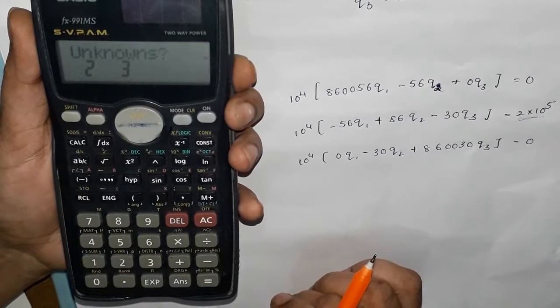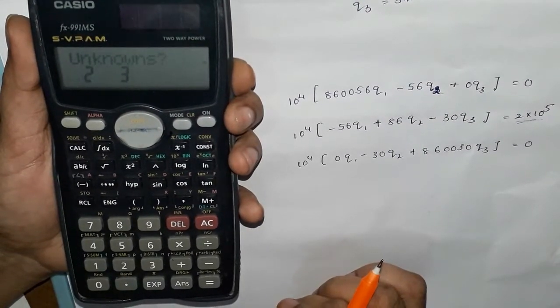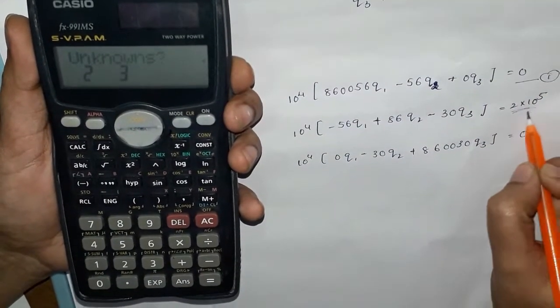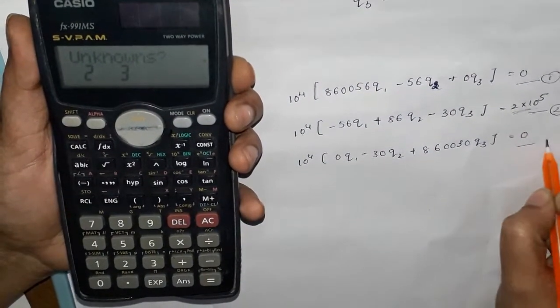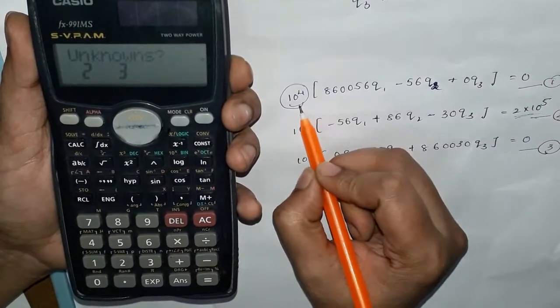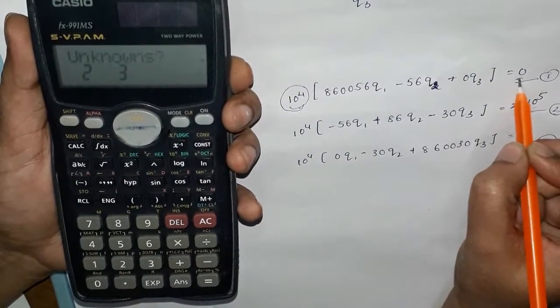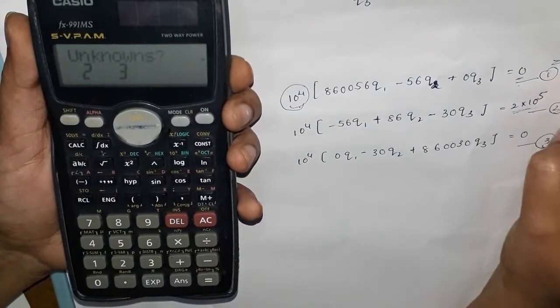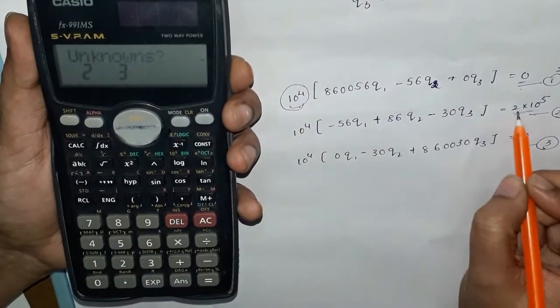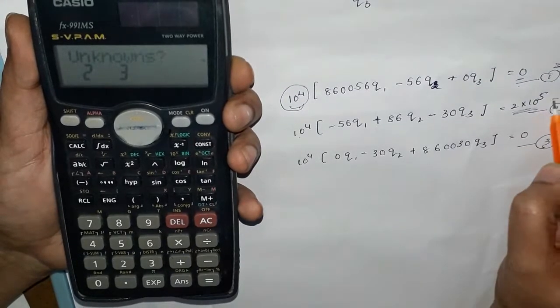Next, finding 3 unknowns. We have first equation, second equation, and third equation. We'll divide by 10 to the power of 4. The common term is 0 by 10⁴, so the value is 0. We'll find 2×10⁵ by 10⁴, which equals 20. 0 by 10⁴ is nothing but 0.